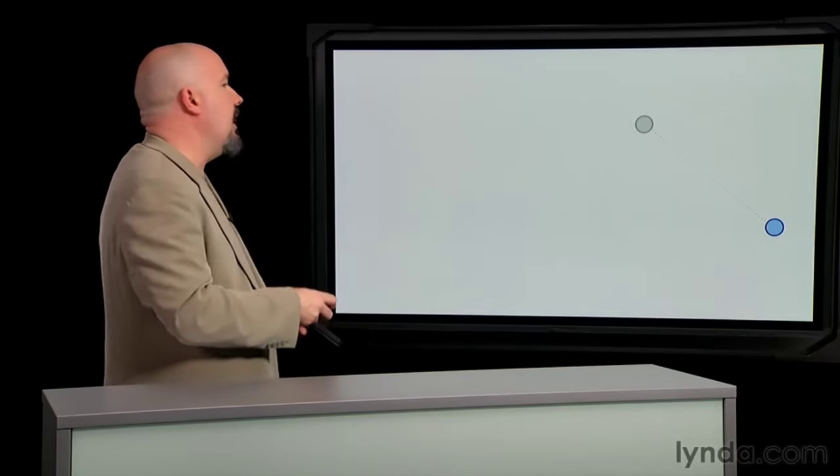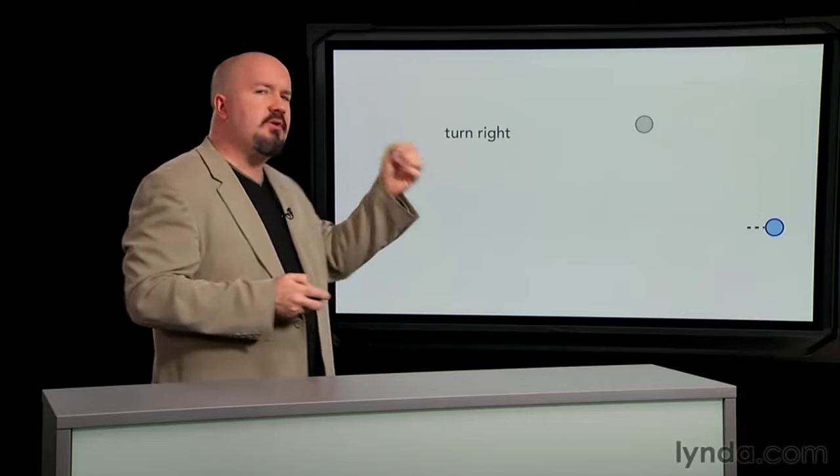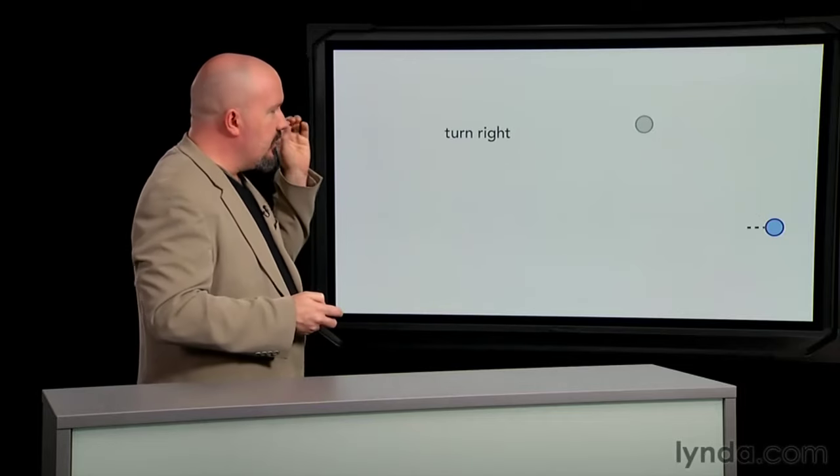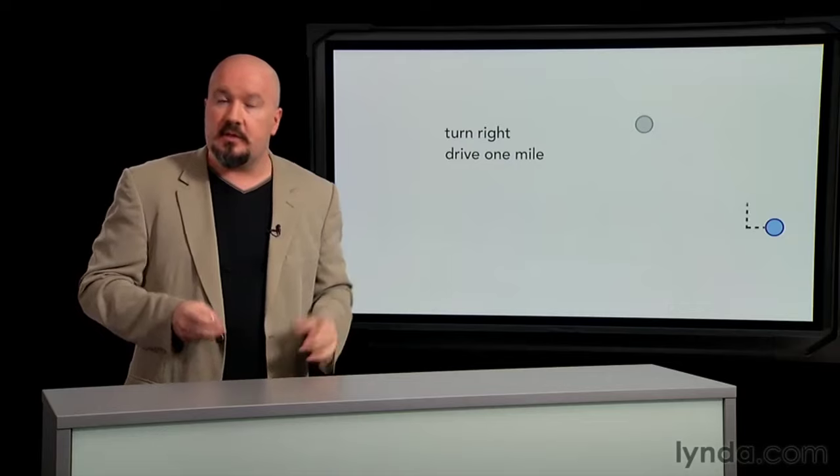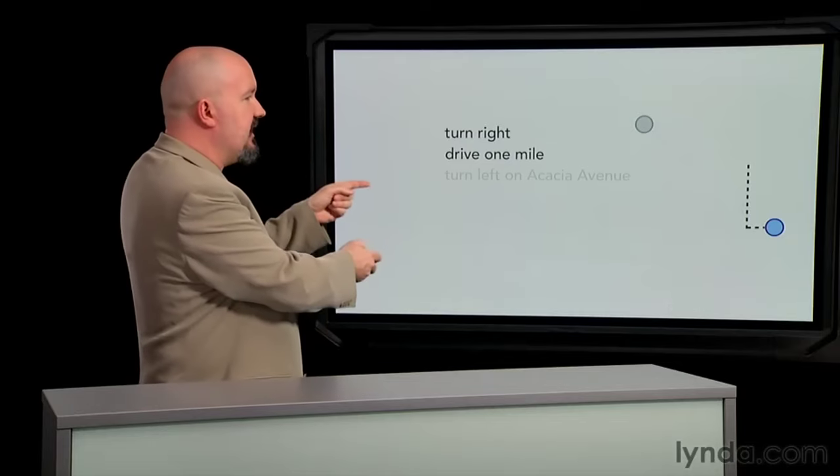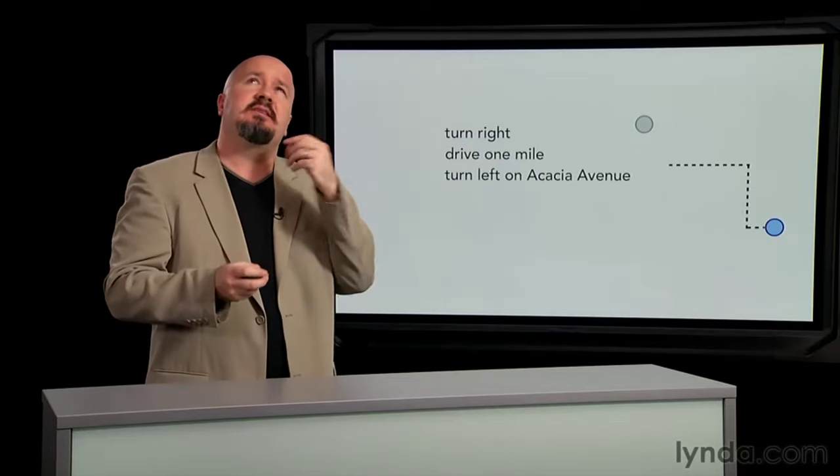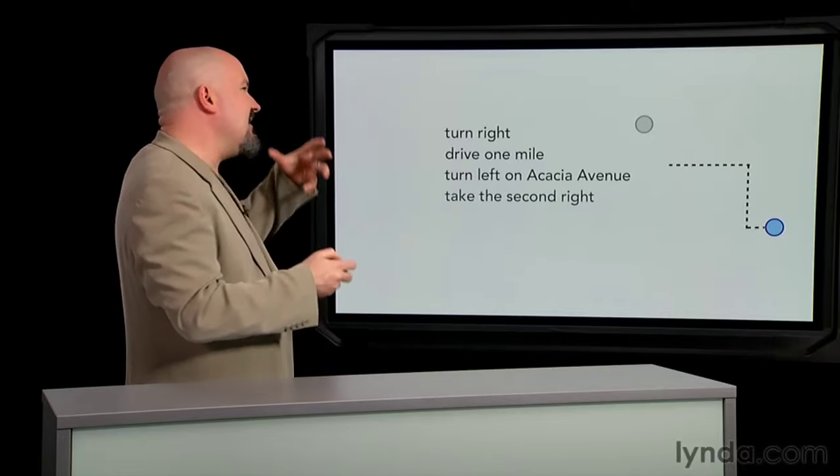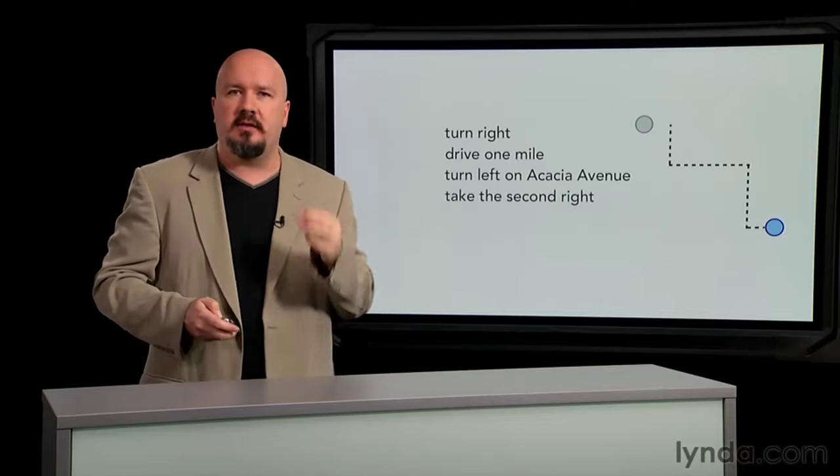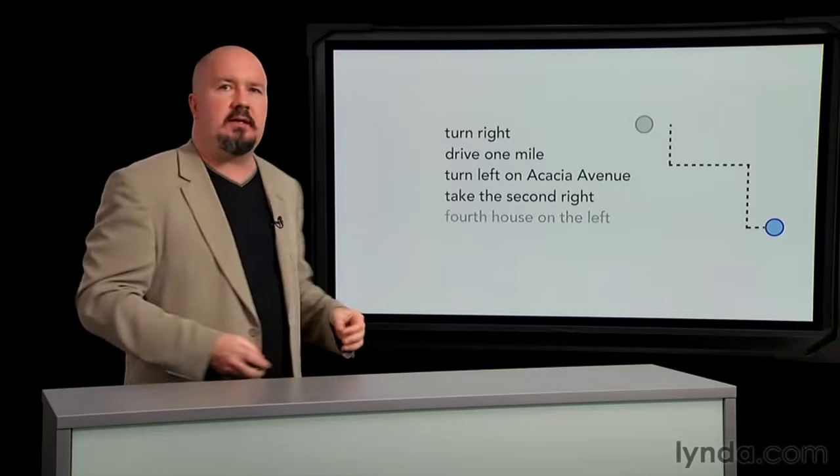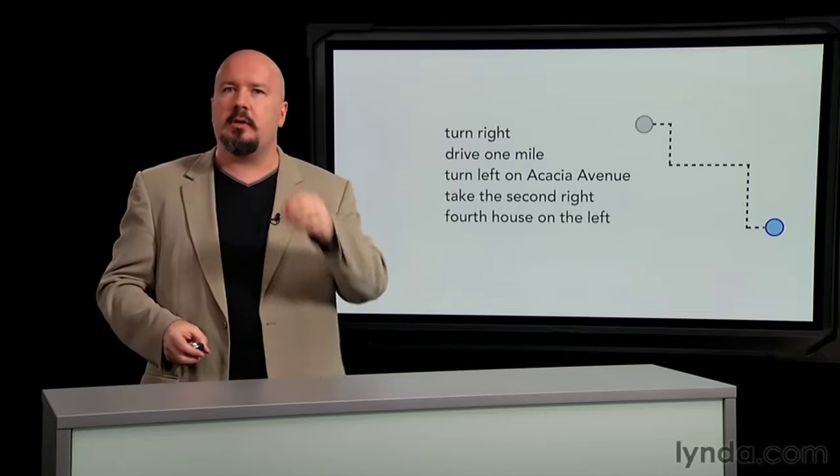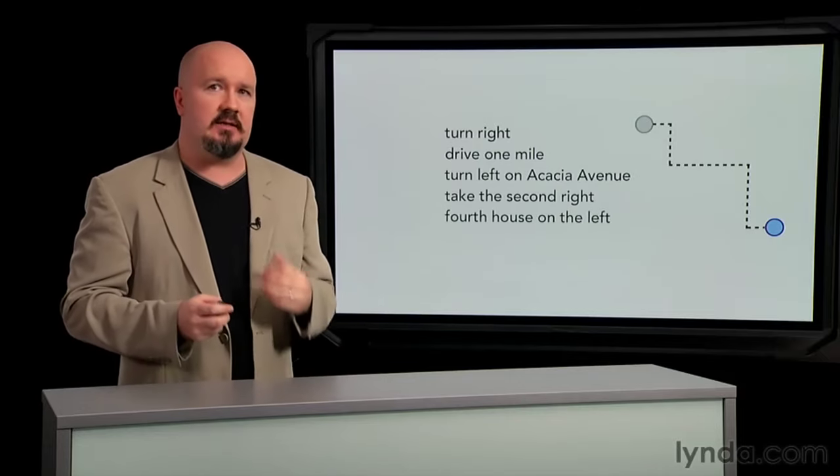So you start to pull this apart, and you say, you're going to need to turn right, then drive one mile, then you'll turn left on Acacia Avenue, then you'll take the second right, and then it's the fourth house on the left. Specific, individual, simple, clear, self-contained instructions.